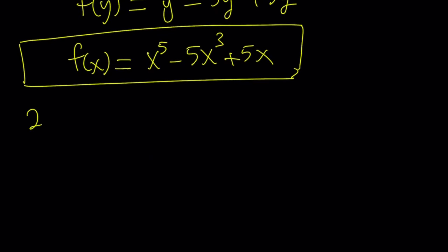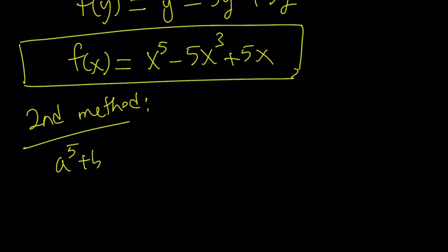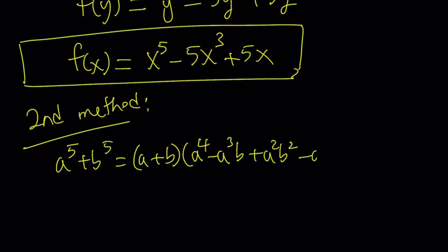My second method uses the formula for a to the 5th plus b to the 5th. If you have the sum of two odd powers, it's always factorable. a plus b is a factor, and the other factor is a to the 4th minus a cubed b plus a squared b squared minus a b cubed plus b to the 4th. It's similar to the binomial theorem for the second factor, without the binomial coefficients. If you distribute, you get the sum of 5th powers.